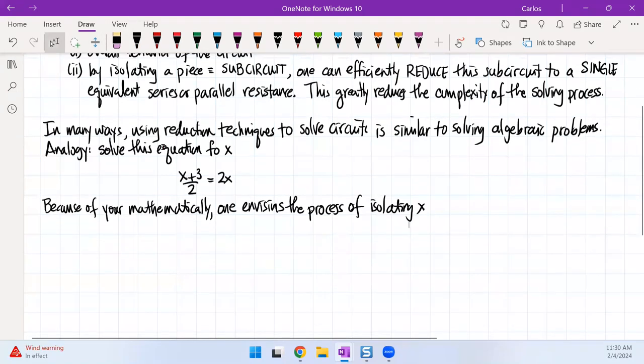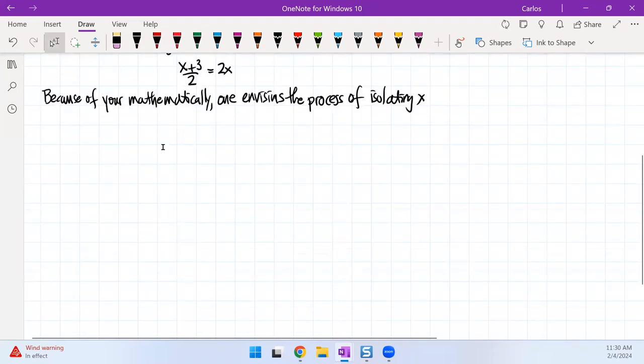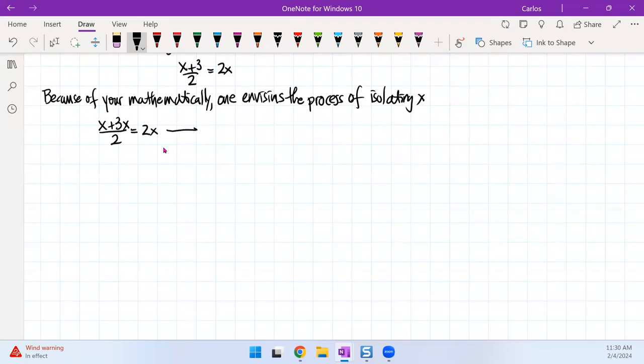So one example would be something like this. You would go in and you would look at this equation. And the first step that you're going to do, you might not even realize it, is that you're going to multiply both sides by 2.